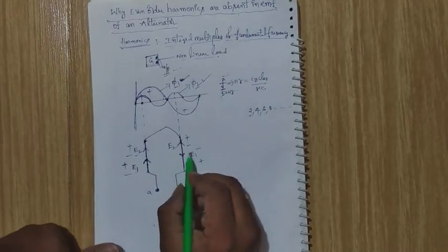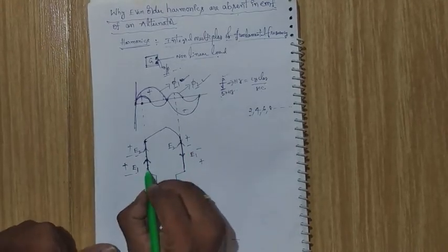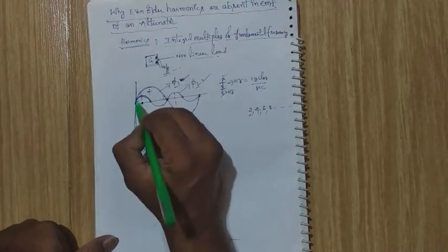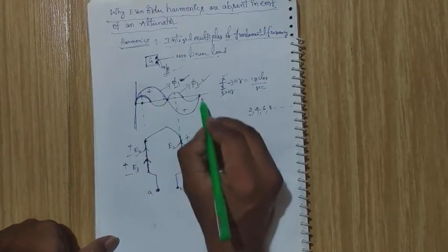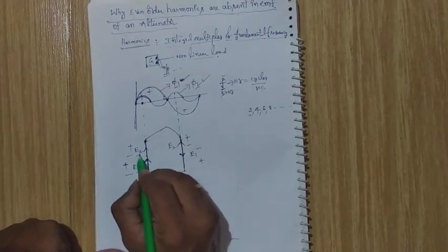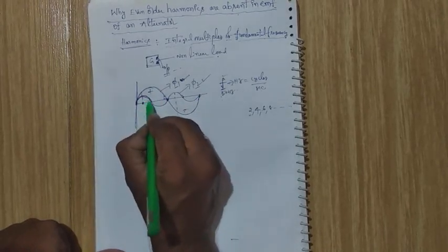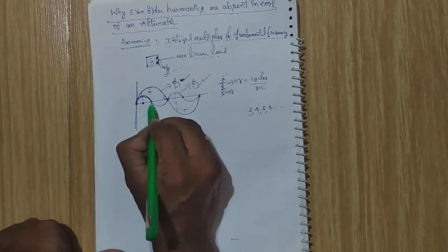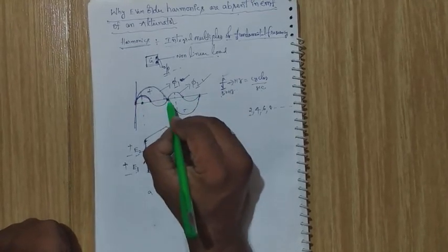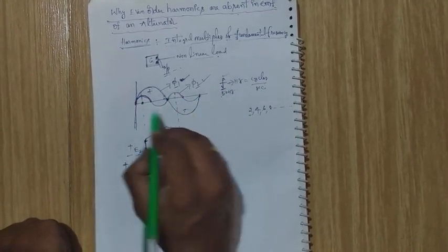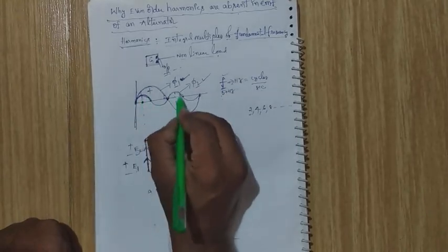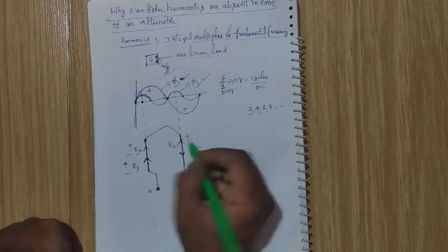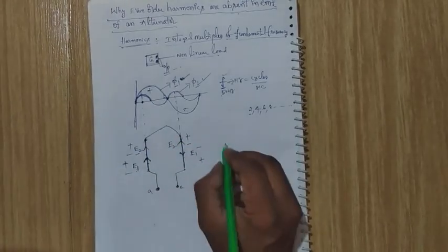Notice that for the fundamental wave, coil side one sees a positive half cycle and coil side two sees a negative half cycle. But for the second harmonic EMF, at the same instant both coil side one and coil side two see a positive half cycle. That means the current direction for e₂ is upward in both conductors.